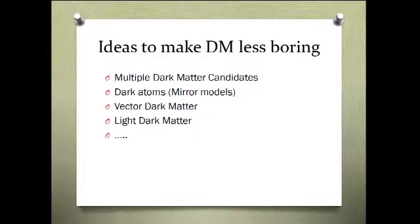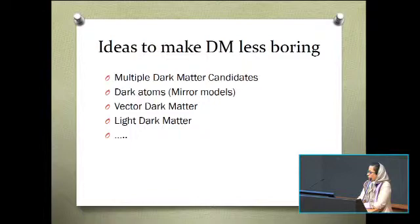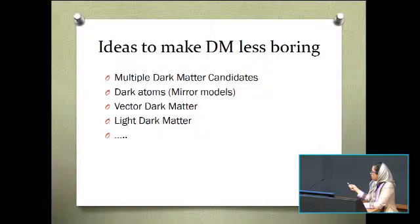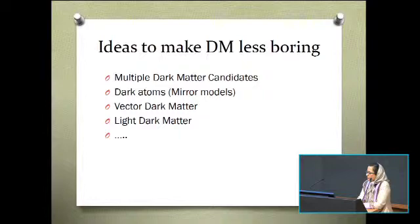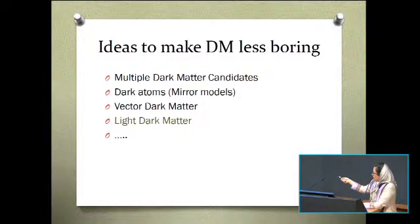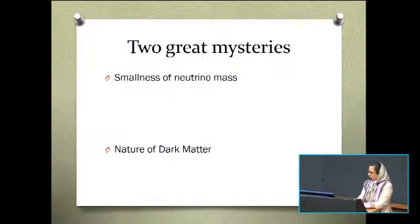These are some ideas to make dark sector less boring. Maybe there are multiple dark matter candidates. There is no reason to believe that dark matter is elementary. Maybe it is composite. We have not so far measured the spin of the dark matter. So there is no reason to restrict to a scalar or fermion particle. The spin of the dark matter can be one, for example. And finally, there is no reason to restrict ourselves to 100 to 1000 times mass of proton. Maybe dark matter particle is light, for example, as light as electrons. There are other possibilities to make dark matter a little bit more interesting, in my opinion, which has been discussed in the literature. Here I have only listed the ideas that I also have worked on and somewhat contributed to.